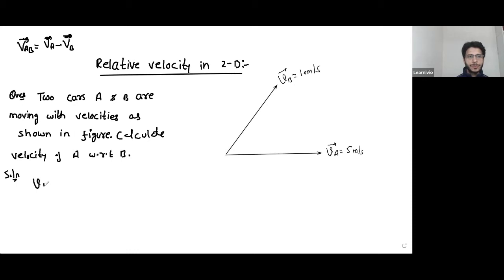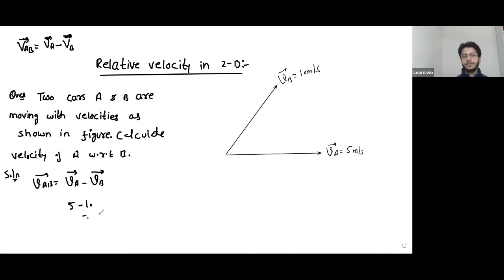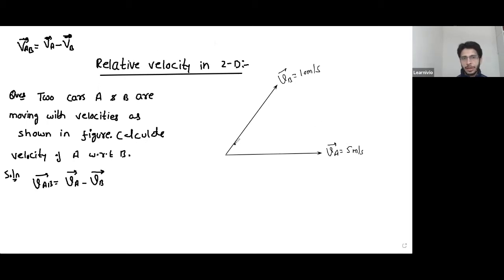You need the velocity of A with respect to B, which is vector VA minus vector VB. You cannot subtract them directly. You cannot write 5 minus 10 equals minus 5 as your answer. You can subtract directly only if the bodies are moving in the same direction. But here they are not — they are inclined at some angle. Let's say that angle is 60 degrees.